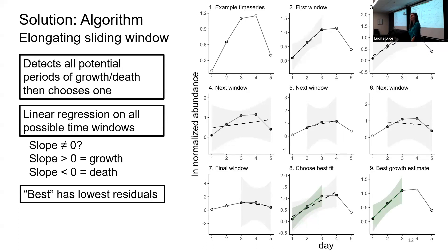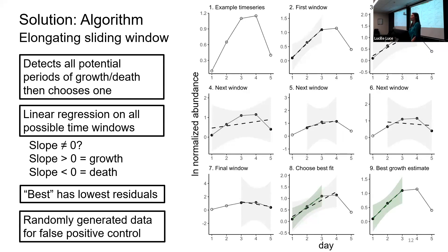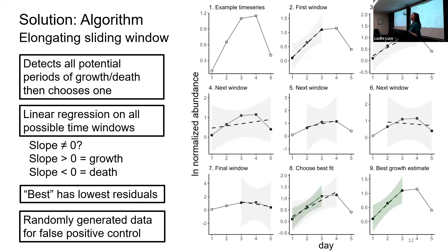I just did a lot of regressions. To control for false positives, I randomly generated data and applied the same algorithm to it to assess how many spurious growth or death estimates I would get in data that obviously isn't reflecting growth, and controlled for that.